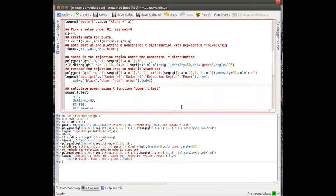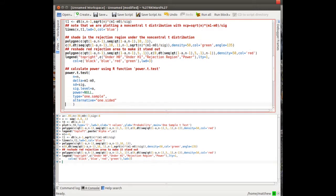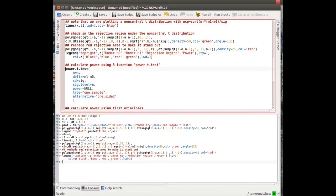So the function in R to do that is called power.t.test. Here n is 30, delta is 4 minus 3, σ is 4, α is 0.05, and we're leaving power empty because that's what we want to calculate. It's a one-sample, one-sided test.